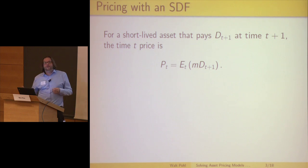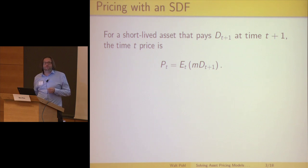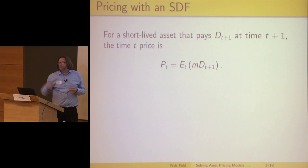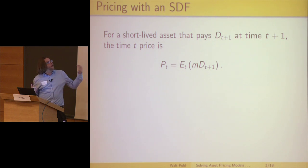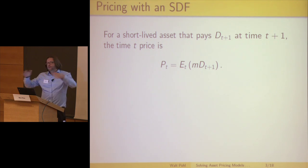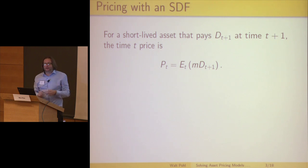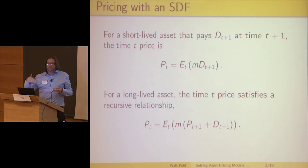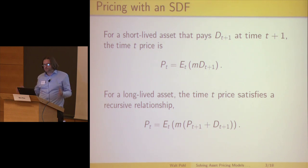A stochastic discount factor is simply a way to write a price as a weighted expectation. Say you have an asset that pays off tomorrow, like a one-month T-bill — there exists a random variable m such that the price today is the expectation of the possible payoffs tomorrow multiplied by m. For a long-lived asset like a stock, which exists forever, instead of getting something quite so simple, you get a recursive relationship: the price today is a discounted sum of possible prices plus the payoffs in the next period.